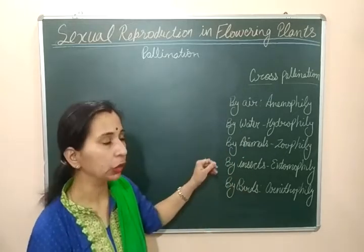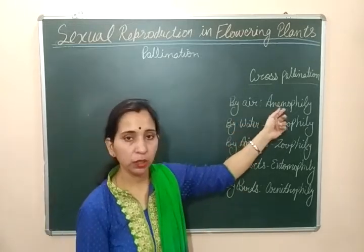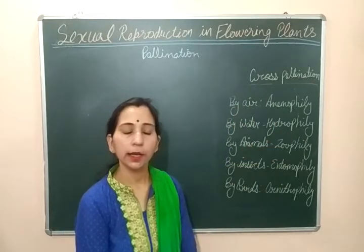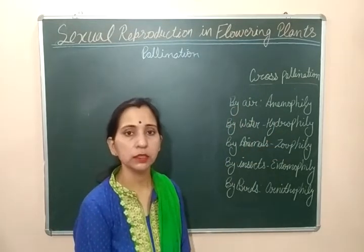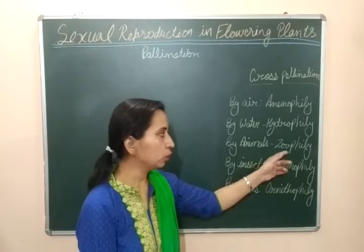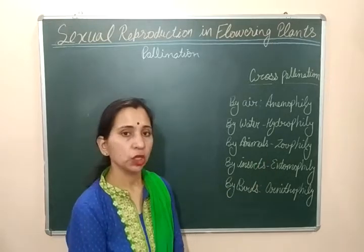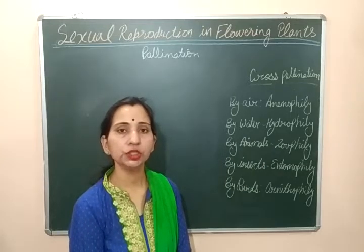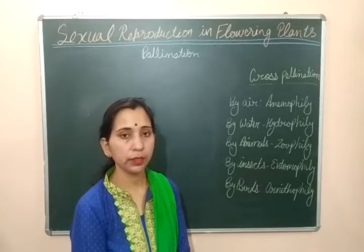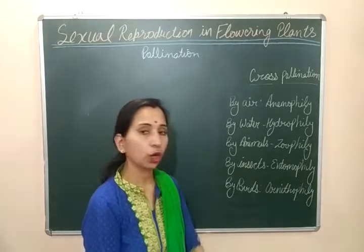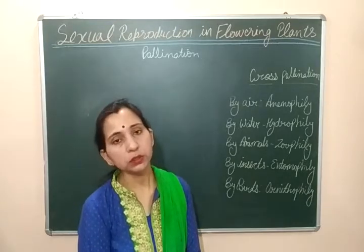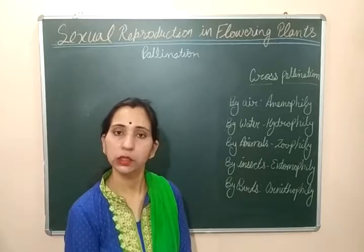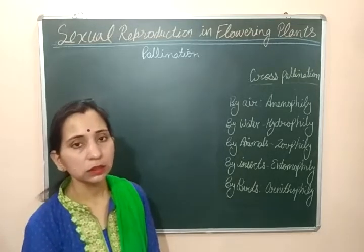We looked at different types of cross pollination in the previous video: anemophily, in which air is used as a pollinating agent; hydrophily, in which water is used; zoophily, in which animals are used; entomophily, in which insects are used; and ornithophily, in which birds are used as pollinating agents for the transfer of pollen grains.